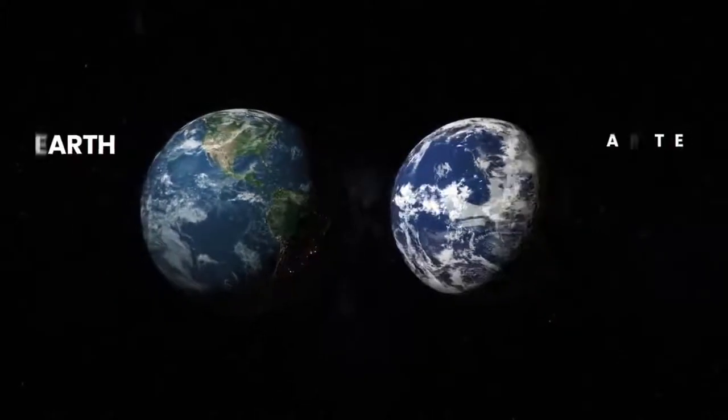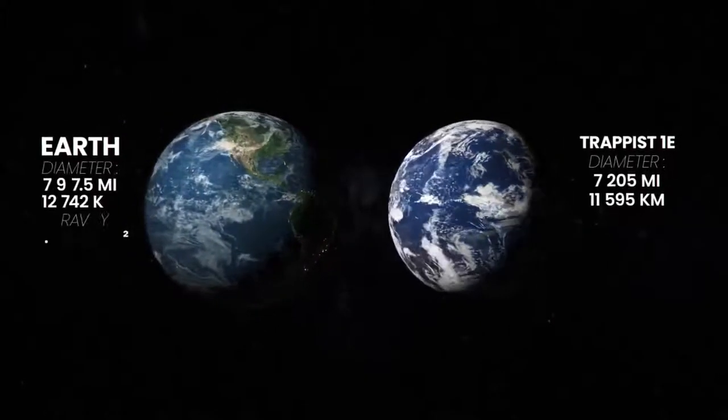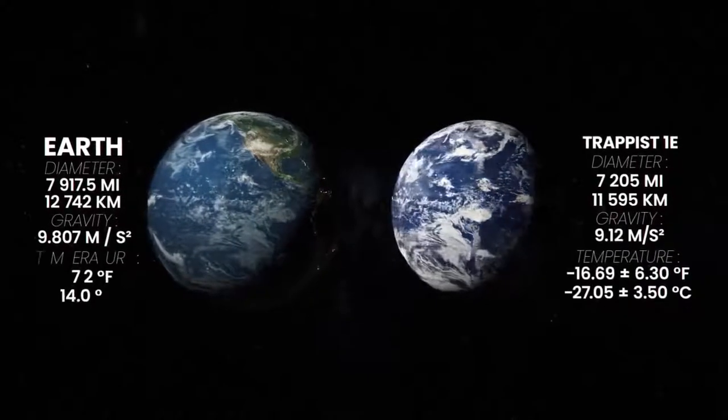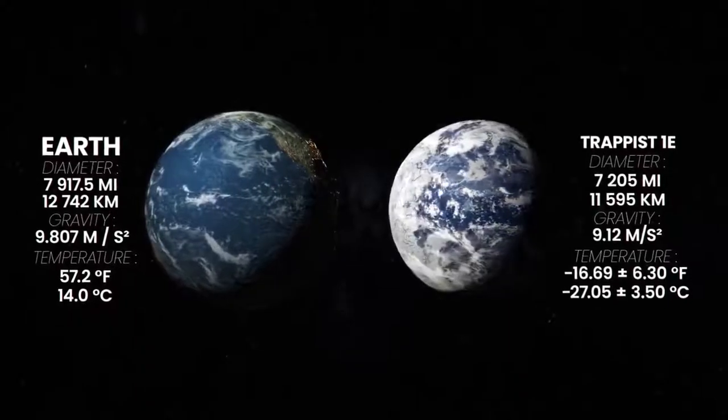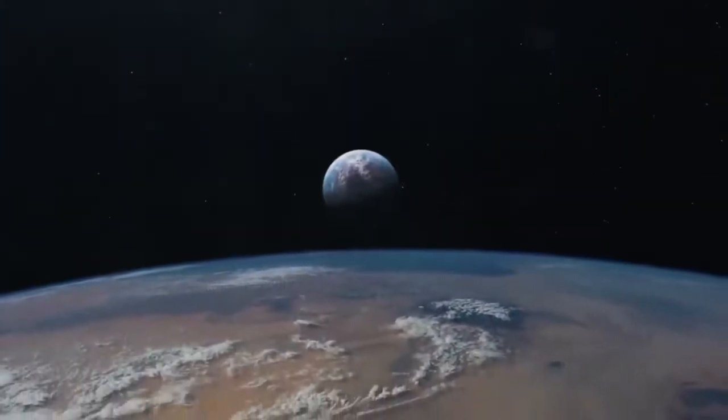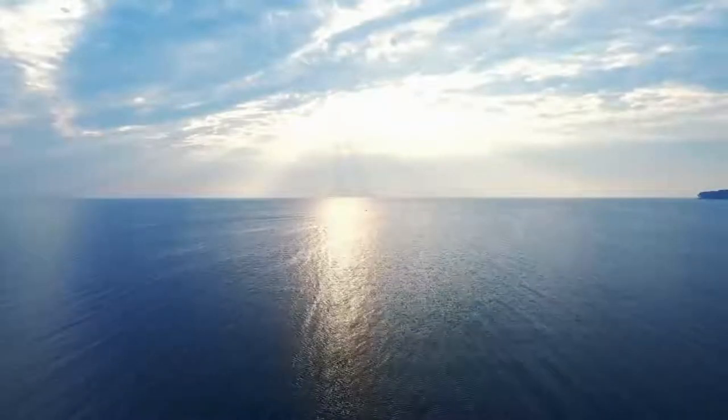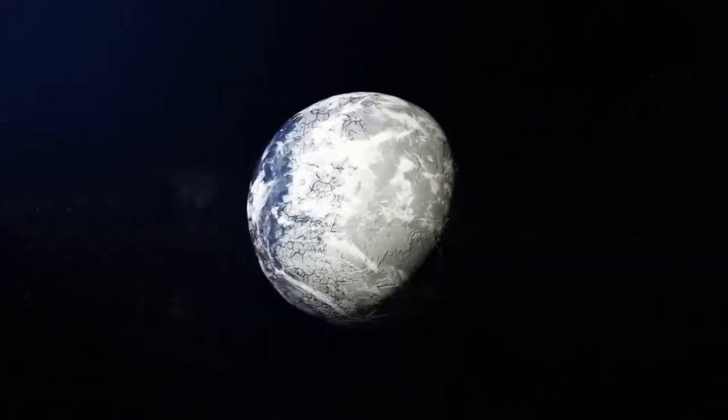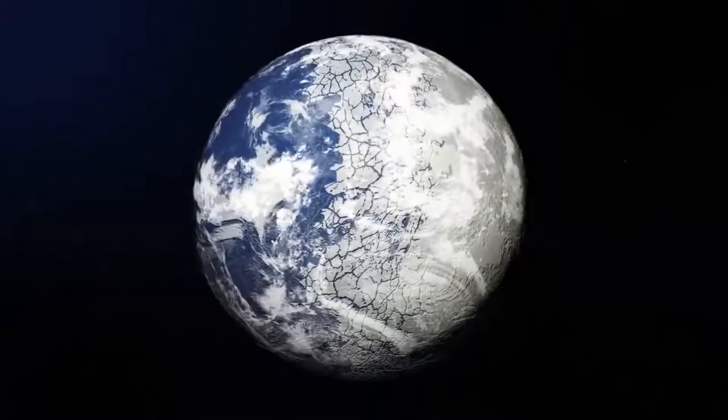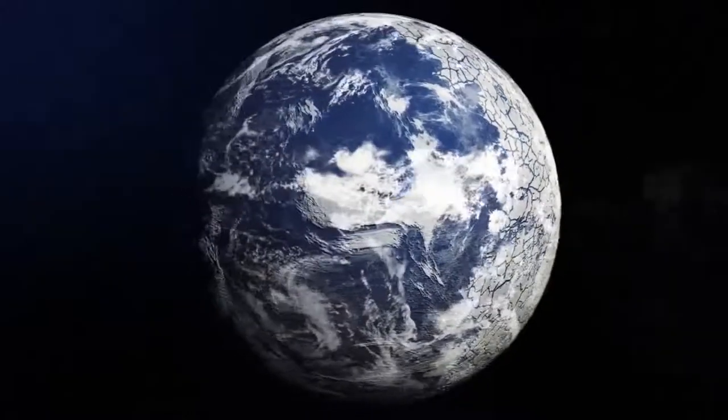Trappist-1e is an exoplanet which orbits around the habitable zone and is similar to the Earth's mass, radius, gravity, and temperature. Astronomers say it has a compact atmosphere, and this one has the greatest chance of being an ocean planet like the Earth. This planet really does have the chance of being potentially habitable for life as we know it.